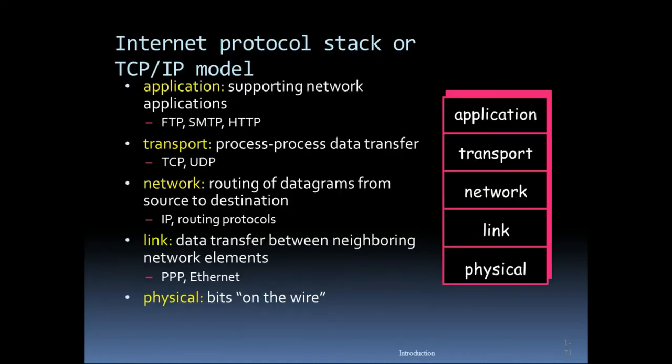The Internet protocol stack, or TCP/IP model: the application layer supports network applications such as FTP, SMTP, and HTTP. The transport layer handles process-to-process data transfer using TCP and UDP. The network layer is responsible for routing datagrams from source to destination using IP and routing protocols.